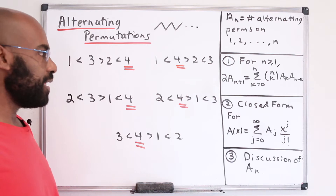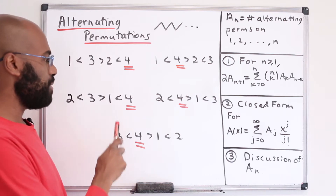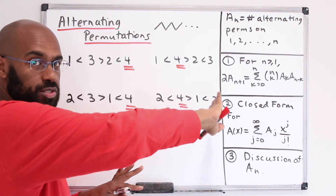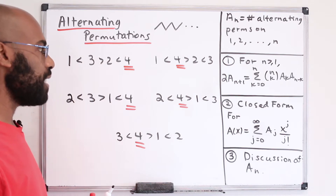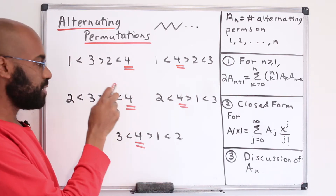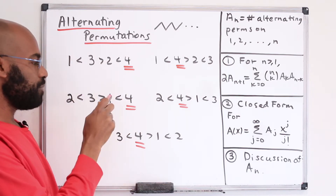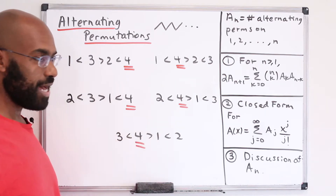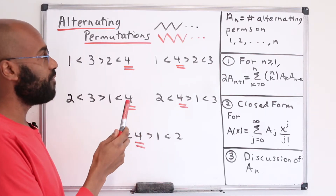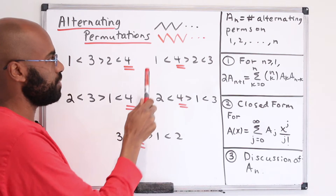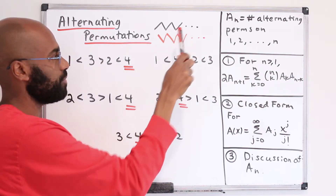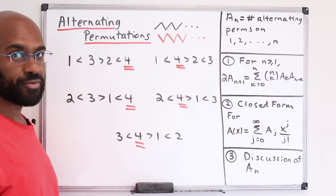So if we try to do an analysis where we pick the largest number and break this up into two smaller permutations, we won't be able to pick that 4 to be in any of the positions because some positions won't be allowed. So what we're going to do is add in what we call reverse alternating permutations, which go down, up, down, up, down, up.